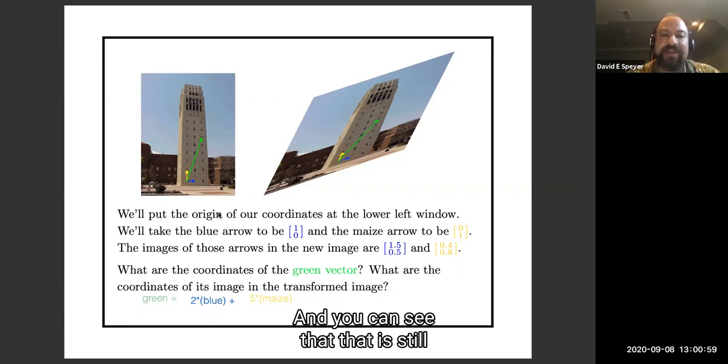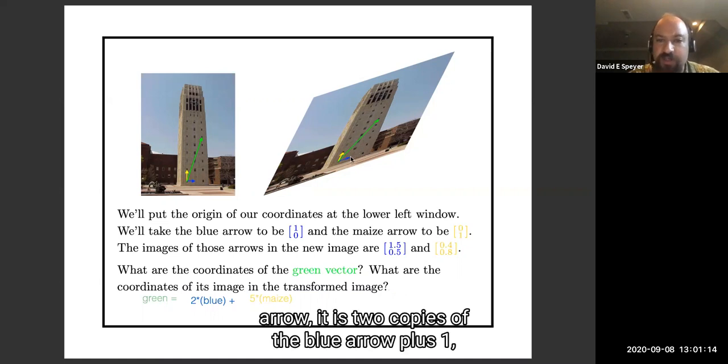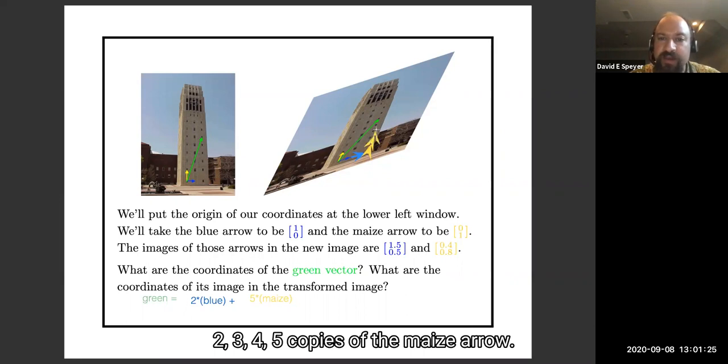You can see that that is still true over in the output picture. If I go over to this green arrow, it is 2 copies of the blue arrow plus 5 times maize. 1, 2, 3, 4, 5 copies of the maize arrow.